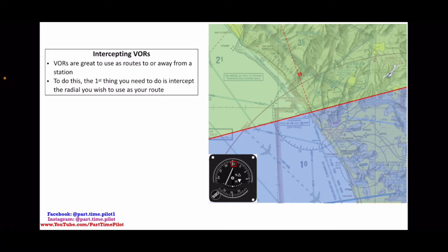Victor Airways use VORs, so it's a great way to travel cross-country and use these. We've got to figure out how we intercept these routes and how we get on them efficiently and effectively. The first thing you'll need to do is intercept the radial you wish to use as your route.